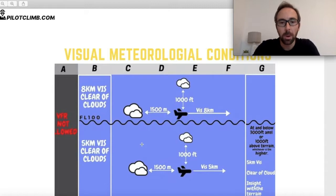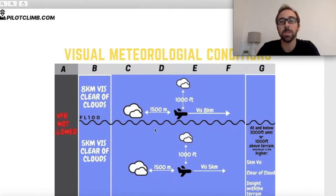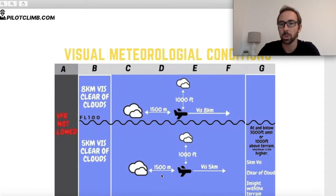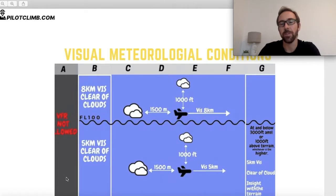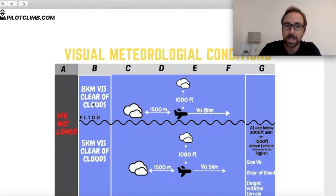I made a table showing VMC criteria for each airspace class — Alpha, Bravo, Charlie, Delta, Echo, Foxtrot, and Golf. In class Alpha, VFR is not allowed at all; only IFR planes can fly there. In Bravo airspace, above flight level 100 you need 8 km visibility minimum and be clear of clouds; below FL100 the minimum is 5 km visibility and clear of clouds. In Charlie, Delta, Echo, and Foxtrot airspace, above FL100 you need 8 km visibility with 1,000 ft vertical and 1,500 m horizontal cloud separation; below FL100 the visibility minimum drops to 5 km but cloud separation remains the same.